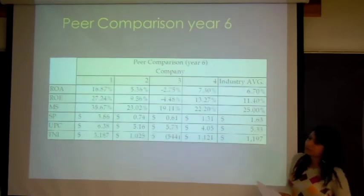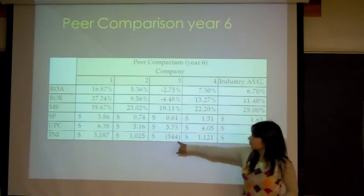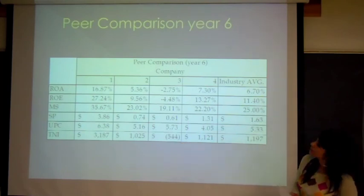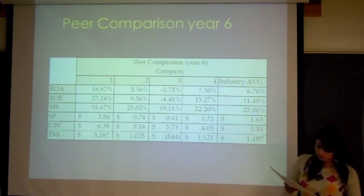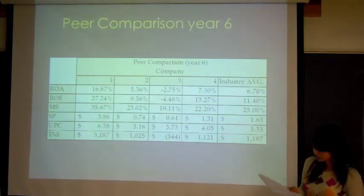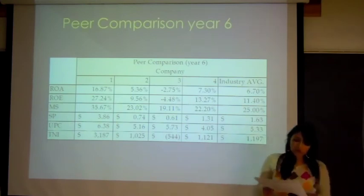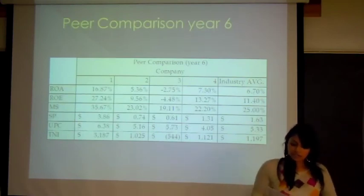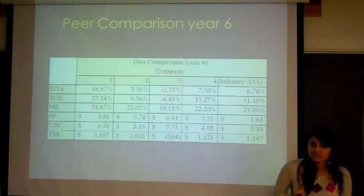Our company lowered ROA and ROE in year 6 due to a net loss of $544,000 for that year. For year 6, company 1 increased their total net income to $3,187,000. And our corporation unit production cost increased from $5.06 to $5.73. Overall, My Pump did not reach the target goals because the company had struggles those two years. However, we did manage to lower our debt a lot.